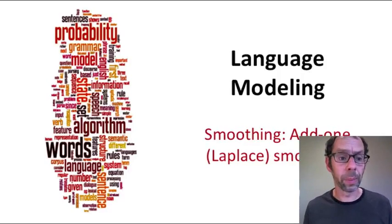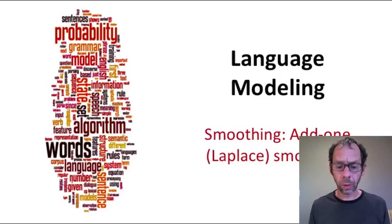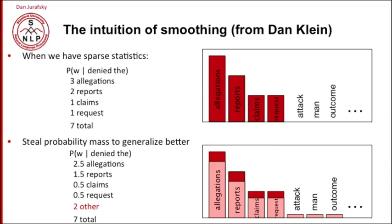How do we deal with bigrams with zero probability? The simplest idea is called add-one smoothing. And let's look at a picture that gives us the intuition of smoothing in general from Dan Klein.